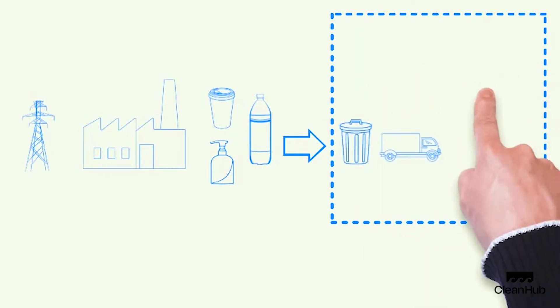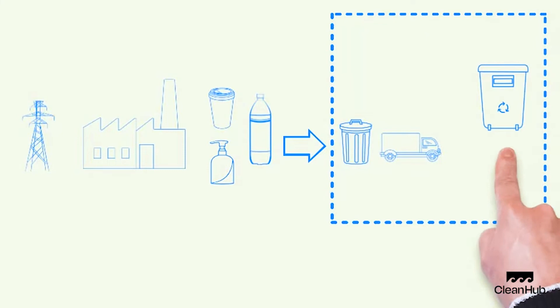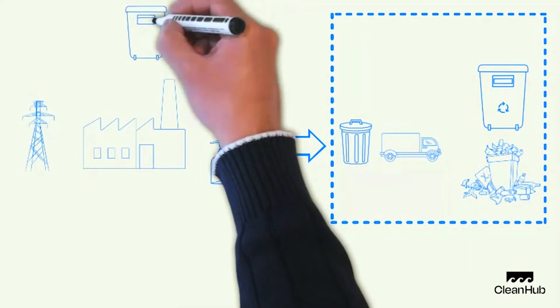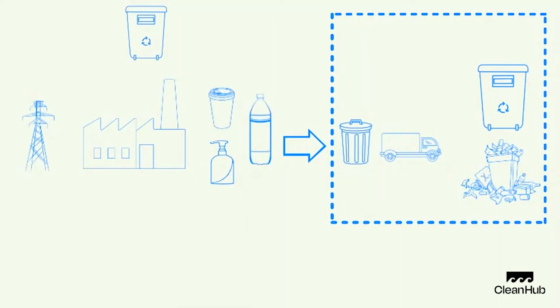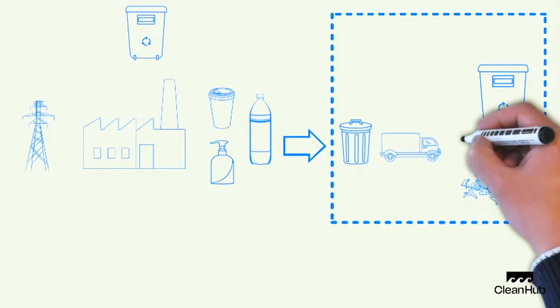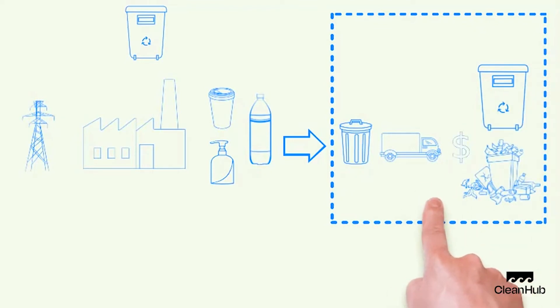But here's the first problem we talked about before. Waste management systems are not a very profitable business model particularly in developing countries. Recyclable waste has some value because it can go back into making things but non-recyclable waste has no value. In fact it costs money to get rid of it. That's why it often ends up in the cheapest possible landfill and in coastal regions it risks ending up in the ocean.